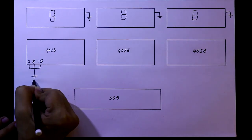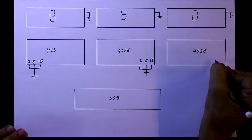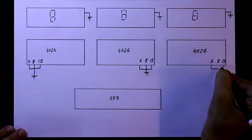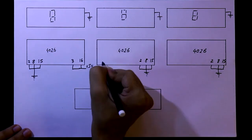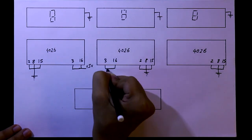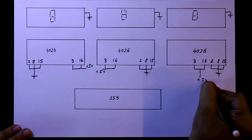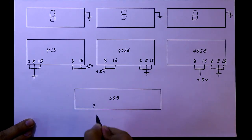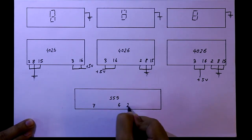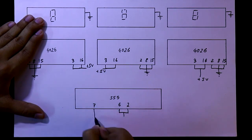It is pin number 2, 8 and 15 — these 3 are connected to the ground. And pin number 3 and 16 — these 2 are connected to plus 5 volt. Here it is pin number 7, 6 and 2. Pin number 6 and 2, these 2 are connected together.